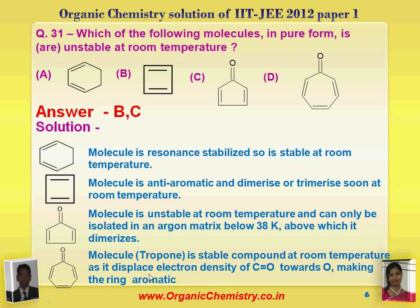The last molecule disperses electron density of the C=O towards oxygen, making the ring aromatic. When we disperse this pi bond electron density towards oxygen, a positive charge is created over this carbon, and due to that positive charge, the ring becomes aromatic. But in the other case, when we disperse sigma-pi electrons towards oxygen, a positive charge is created at that position and the ring becomes anti-aromatic, so that molecule is not stable.